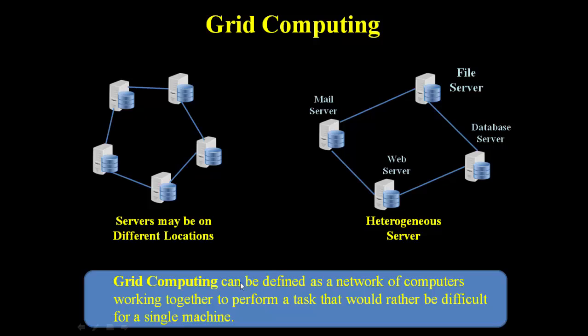Grid computing can be defined as a network of computers working together to perform a task that would rather be difficult for a single machine. So this is the difference between grid computing and cluster computing.